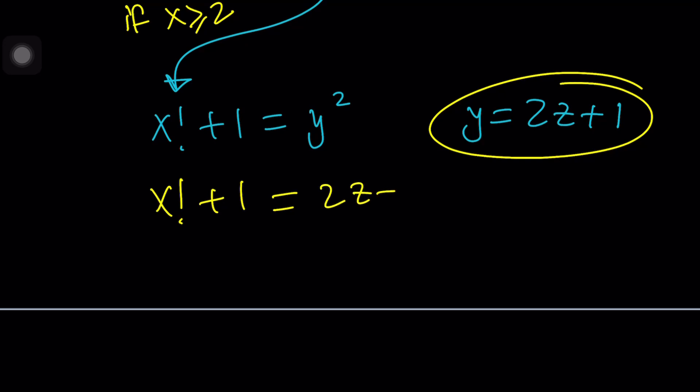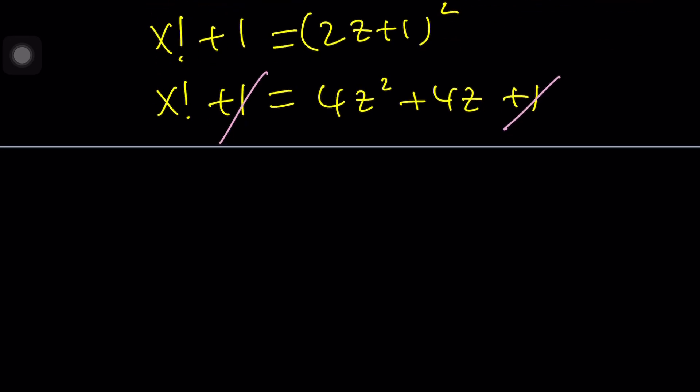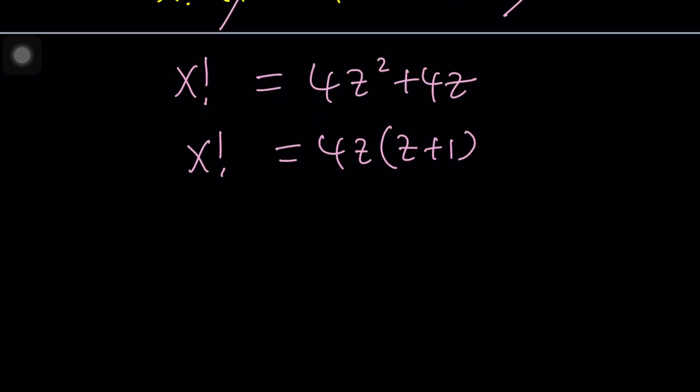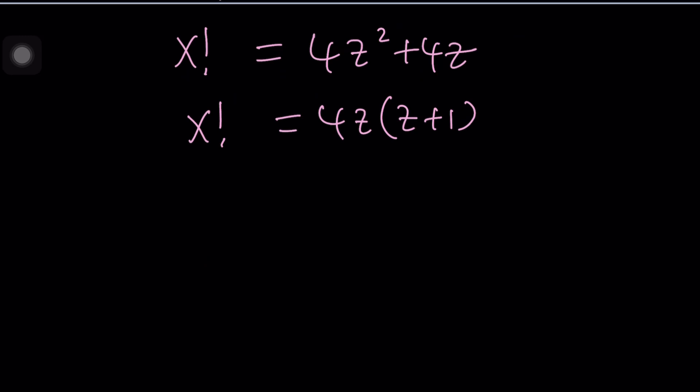I'm going to replace y with this. If you square the right hand side you get 4z squared plus 4z plus 1. Then 1 cancels out leaving us with something like this. The question is can we get factorials of this type? This can be written as 4z times z plus 1. There seems to be a relationship between these and triangular numbers because if you divide both sides by 8 you get z times z plus 1 divided by 2. These numbers are known as triangular numbers because they make a triangular pattern.